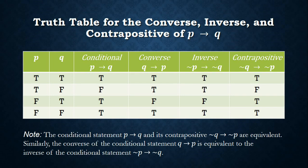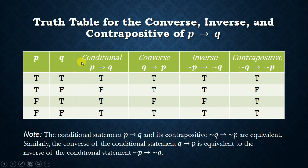The truth values for the converse, inverse, and contrapositive of the conditional statement P implies Q are shown in this table. Observe that the truth value of the conditional statement P implies Q is equivalent to the contrapositive, and also the converse of P implies Q is equivalent to the inverse of P implies Q.